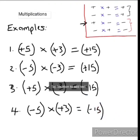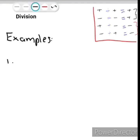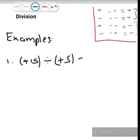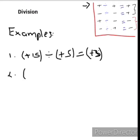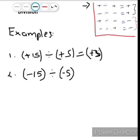We will now move on to some further examples, but we are now going to be dividing. We have our rules on the right-hand side of the page again, now in terms of division. For our first example, a positive 15 divided by a positive 5 equals a positive 3, according to rule one, which says a positive divided by a positive is equal to a positive. For our second example, a negative 15 divided by a negative 5 is equal to a positive 3.